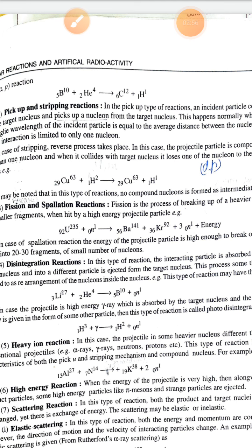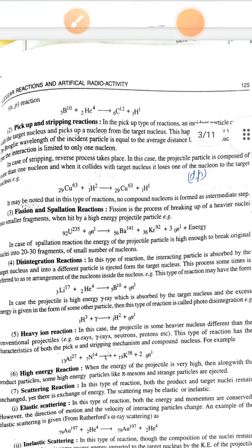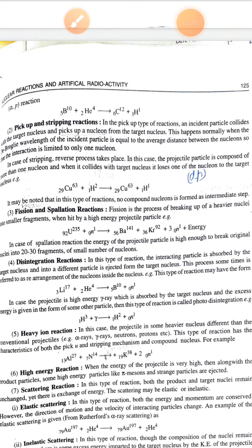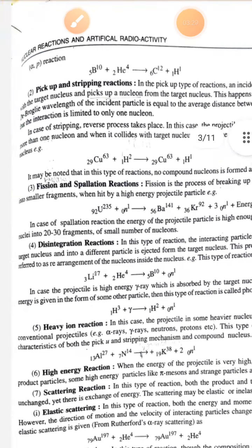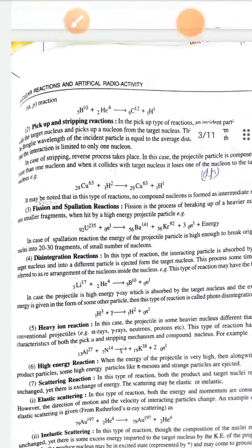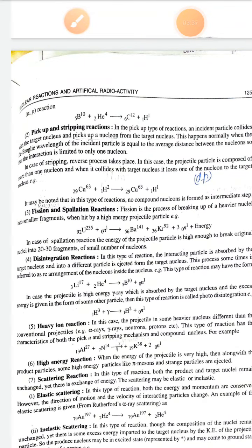A well-known example of fission is the hydrogen bomb, where fission takes place. The next type is spallation reaction. In the fission example with uranium, only two new nucleons are produced. In a spallation reaction, very high energy is produced and a large number of particles are produced — almost 20 to 30 fragment nuclei. So if only one or two new particles are produced it is fission, but if 20 to 30 fragments are produced, it is a spallation reaction.